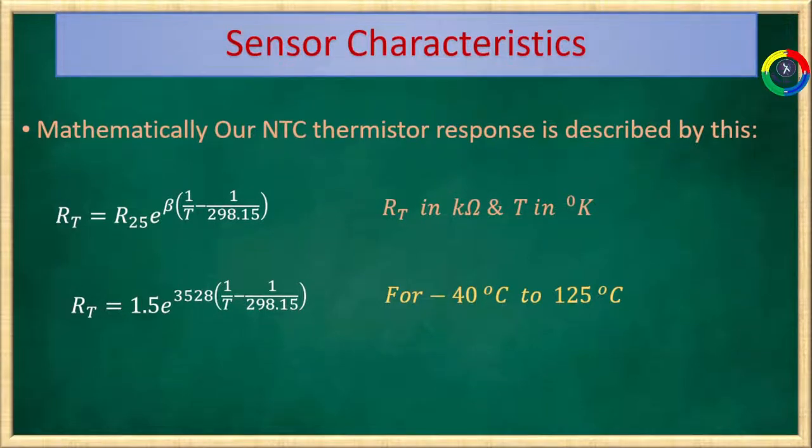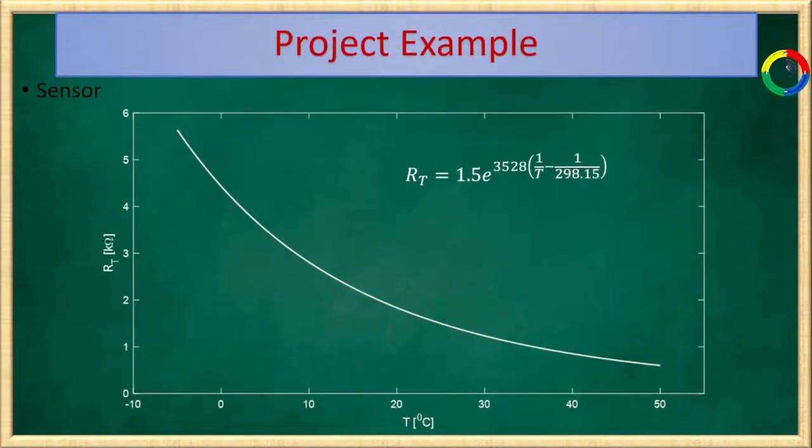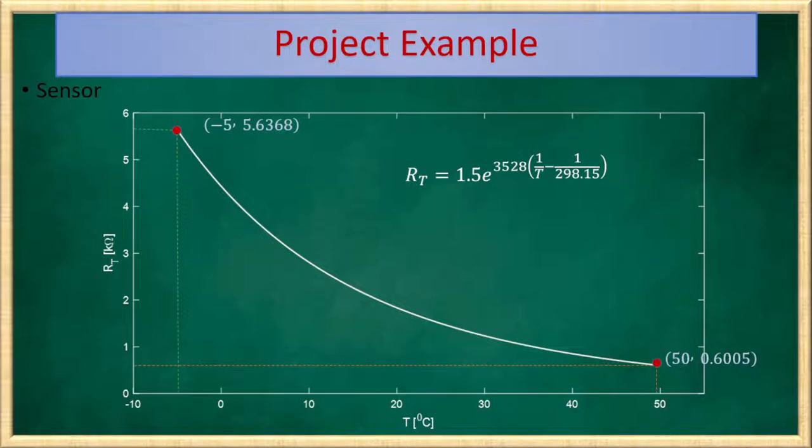We can draw this exponential function in our measurement range from minus 5 degree centigrade to 50 degree centigrade. And those are the endpoints. Here, at minus 5 degree centigrade, the resistance value from this exponential function is 5.6368 kilo ohm. And at 50 degree centigrade, the resistance value is 0.6005 kilo ohm. From this function, you can observe that resistance decreases as temperature increases. That's why we call those thermistors negative temperature coefficient thermistors. We have maximum resistance of 5.6368 kilo ohm at a minimum temperature of minus 5 degree centigrade, while we get a minimum resistance value at maximum temperature value.